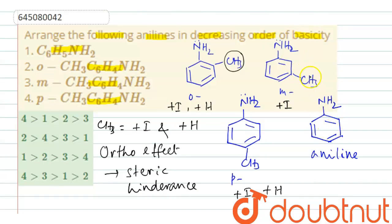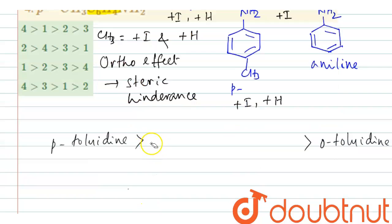You know, metatotoluidine, here plus I effect increases the basicity or availability of the electron pair on nitrogen. Therefore meta will be the next. Next will be meta here. So, paratoluidine, then we have metatotoluidine, and then comes aniline. So paratoluidine will be the most basic, then metatotoluidine, then aniline, then orthotoluidine.